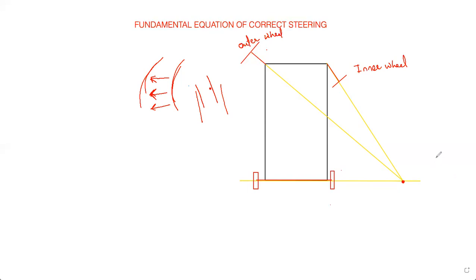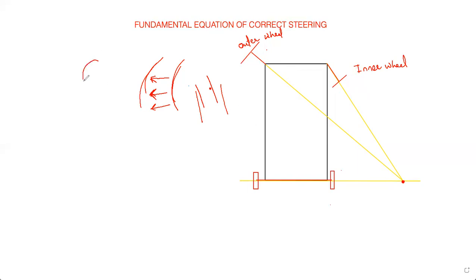If you extend this rear axle, the perpendicular to the rear wheels also meets at the same point. Whenever the vehicle is taking a right turn, the velocity direction of the wheel is in this direction. I draw a perpendicular to the velocity direction. The yellow line is perpendicular to the direction of velocity for both inner and outer wheels, and they meet at the center of rotation.